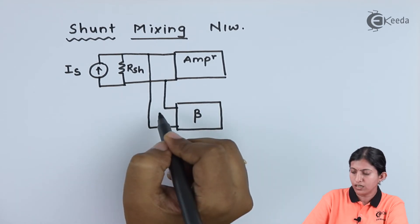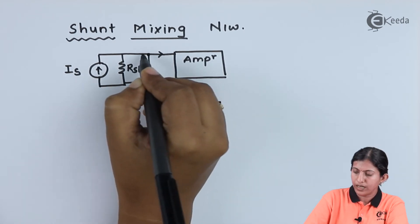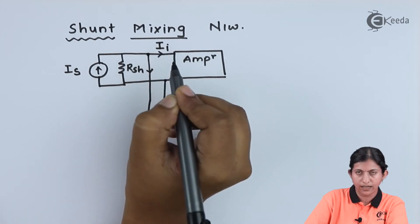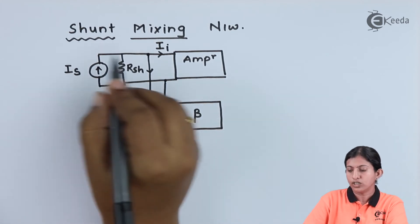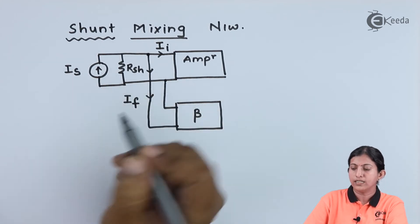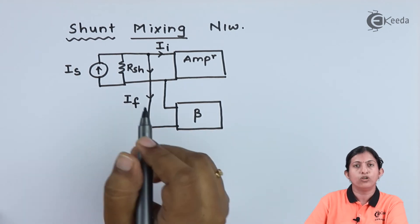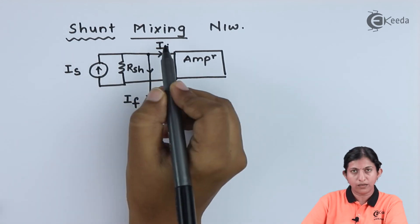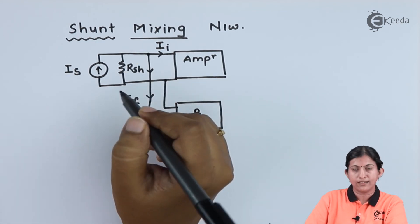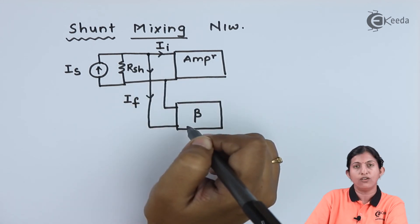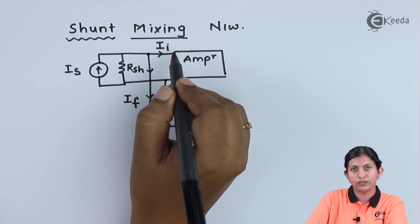The input signal and feedback signal are connected in parallel. At this point, the current is divided into two: the current going to the amplifier is termed Ii, and the current going to the feedback network is termed If. In shunt mixing we use a current source, whereas in series mixing we use a voltage source. In series mixing, Vf and Vs are in series opposition, while in shunt mixing the feedback signal is connected in parallel with the input signal. Is is the input current, If is the feedback current, and Ii is the input current to the amplifier circuit.